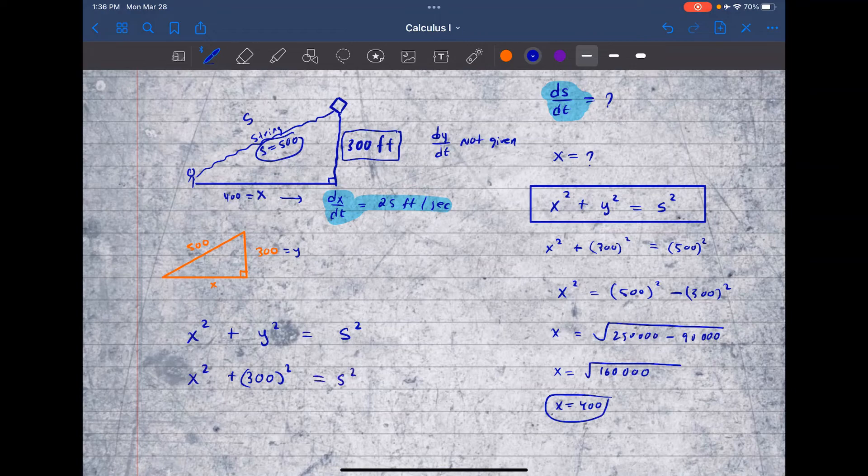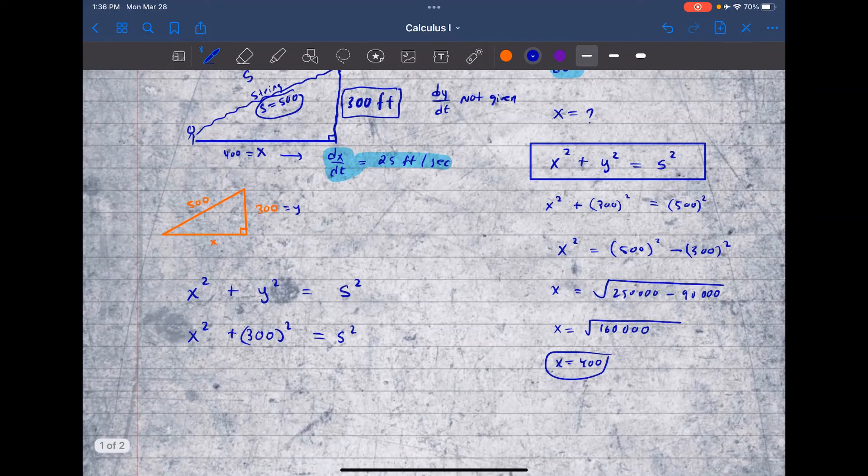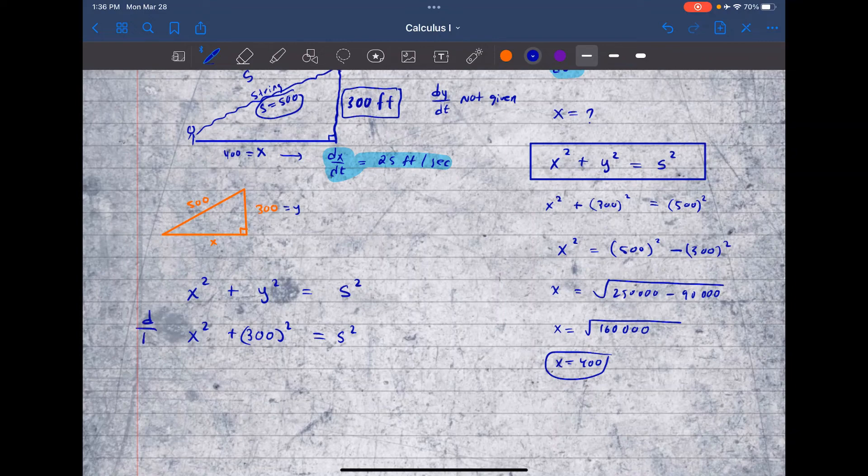And the reason we need to do that is because dy/dt is not given. So when you differentiate with respect to time, dy/dt is going to pop up and we don't want to be stuck in the problem. So we have enough information to find ds/dt. So let's go ahead and differentiate this with respect to time.